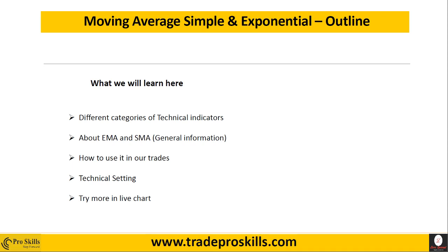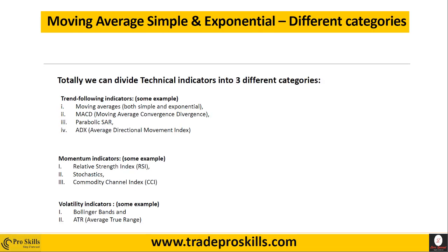What we're going to talk about today: we're going to learn the different categories of technical indicators, then we will talk about EMA and SMA — exponential and simple moving average — how to use them in our trades and technical settings. In the end, we're going to move to the live chart and see how it works.